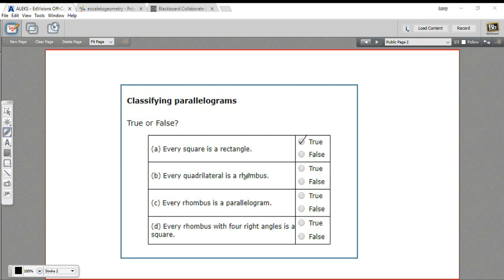This one says every quadrilateral is a rhombus. Well, that's not true. Every rhombus is a quadrilateral, but not every quadrilateral is a rhombus.